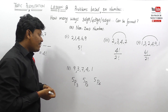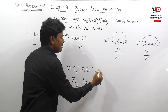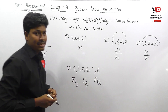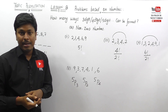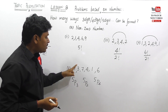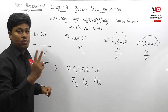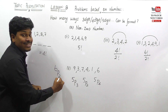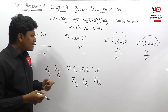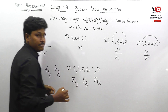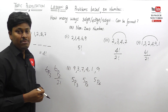Extending the concept: assume six numbers are given. How many two-digit numbers can be formed? Six P2. How many three-digit numbers? Six P3. If any number is repeated in the given set, divide by the corresponding factorial — for example, if 9 is repeated twice, divide by two factorial.